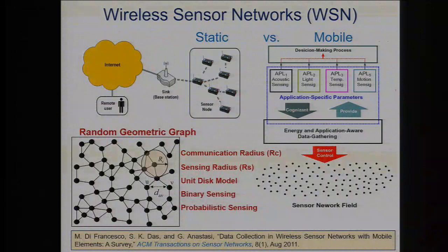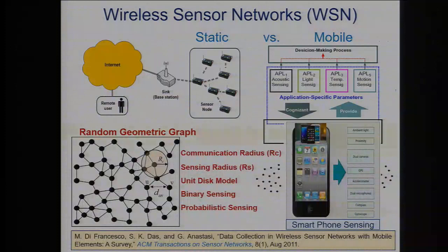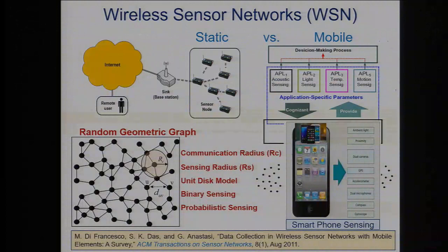Different sensing models exist: binary sensing means within a particular sensing radius you can sense, beyond that you cannot. Probabilistic sensing means sensing intensity attenuates with distance, similar to electromagnetic or gravitational fields. For the last 8-10 years, we've seen a proliferation of smartphones — smartphone sensing is becoming a vital part of research. Each phone has 12 to 14 different kinds of sensors, and smartphone sensing allows humans to interact with both the physical world and the cyber world.